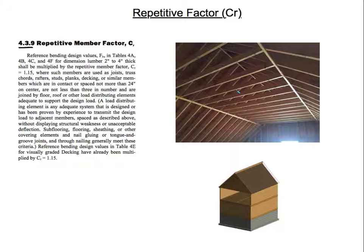Let me read what section 4.3.9, the repetitive member factor, says. It states: reference bending design values Fb in tables 4A, 4B, 4C, and 4F for dimension lumber two inches to four inches thick shall be multiplied by the repetitive member factor CR, which equals 1.15, where such members are used as joists, truss cords, rafters, studs, planks, decking, or similar members which are in contact or spaced not more than 24 inches on center, are not less than three in number, and are joined by floor, roof, or other load-distributing elements adequate to support the design load.